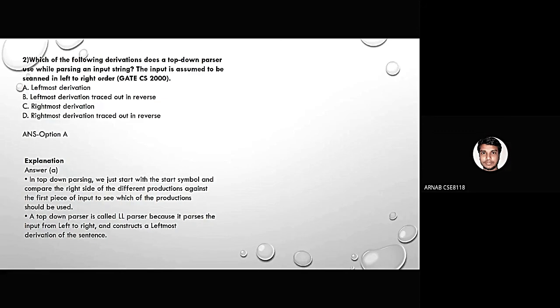The second question is, which of the following derivation does a top-down parser use while parsing an input string? The input is assumed to be scanned in the left to right order. Now, the options are: first option is leftmost derivation and second option is leftmost derivation traced out in reverse, and third option is rightmost derivation and fourth option is rightmost derivation traced out in reverse.